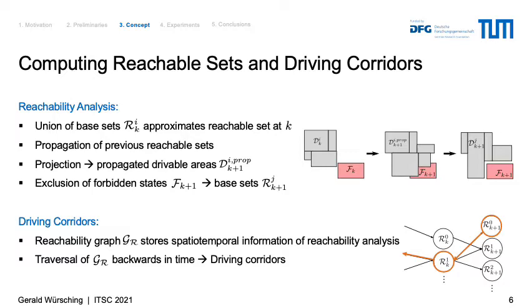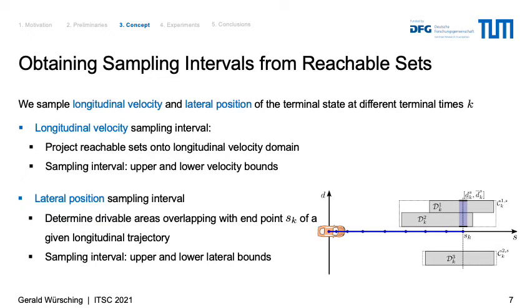To extract driving corridors, we store the propagation information of the reachable sets in a reachability graph — essentially the spatiotemporal information of the reachability analysis. To obtain a driving corridor, we begin at the last time step and traverse the reachability graph backwards in time. This approach yields a driving corridor for the defined planning horizon, and also automatically excludes sets that do not have a successor in the reachability graph — meaning we automatically exclude sets which would collide in future time steps.